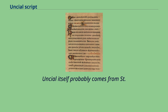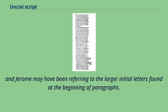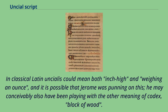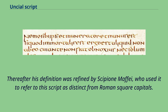It is possible that this is a misreading of uncialibus, and Jerome may have been referring to the larger initial letters found at the beginning of paragraphs. In classical Latin, uncialus could mean both 'inch high' and 'weighing an ounce,' and it is possible that Jerome was punning on this. He may conceivably also have been playing with the other meaning of codex — 'block of wood.' The term Uncial, in the sense of describing this script, was first used by Jean Mabillon in the early 18th century, and thereafter his definition was refined by Scipione Maffei, who used it to refer to this script as distinct from Roman square capitals.